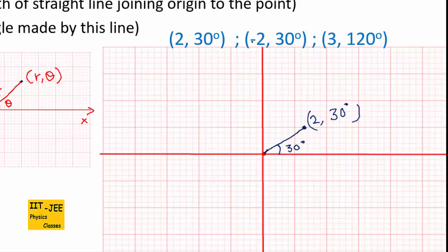Now suppose we have to draw minus 2, 30 degrees. The angle is still 30 degrees, but instead of going outward (positive 2), we go in the opposite direction behind the origin along the same angle. So this point would be minus 2, 30 degrees.